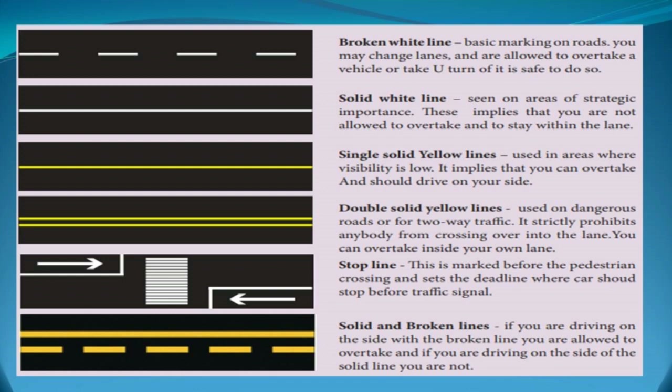Double solid yellow lines are used on dangerous roads or for two-way traffic. The stop line is marked before the pedestrian crossing and sets the deadline where a car should stop before the traffic signal. For solid and broken lines: if you are driving on the side with a broken line, you are allowed to overtake; if you are on the side of the solid line, you are not.